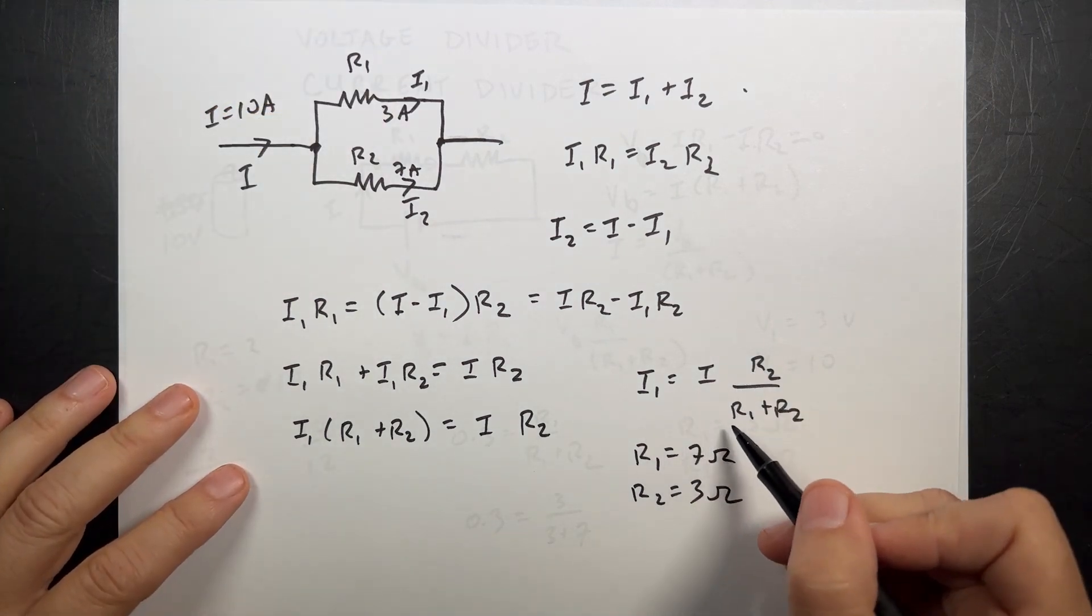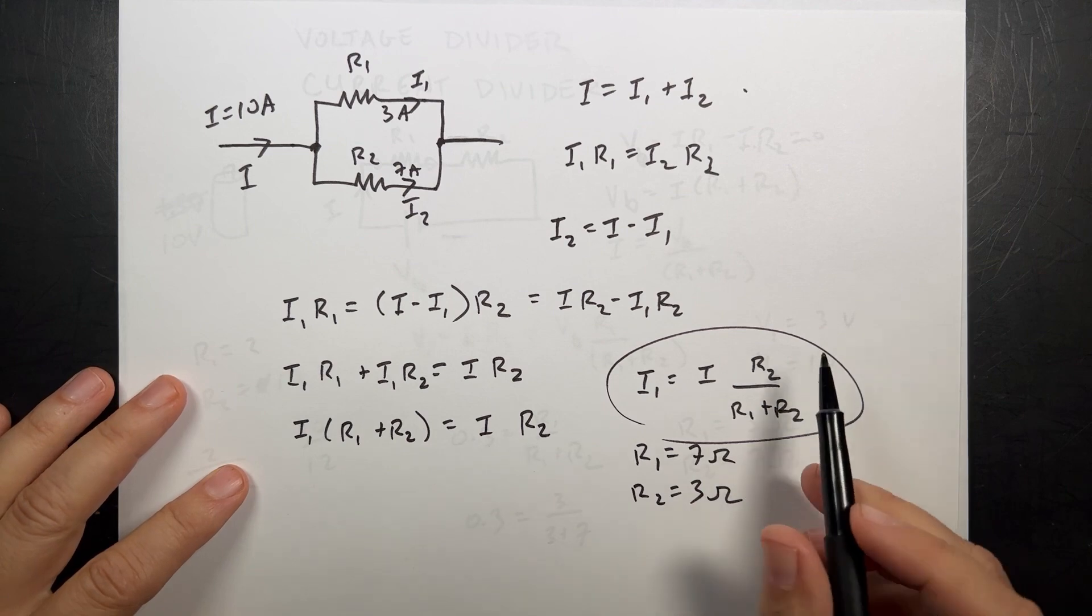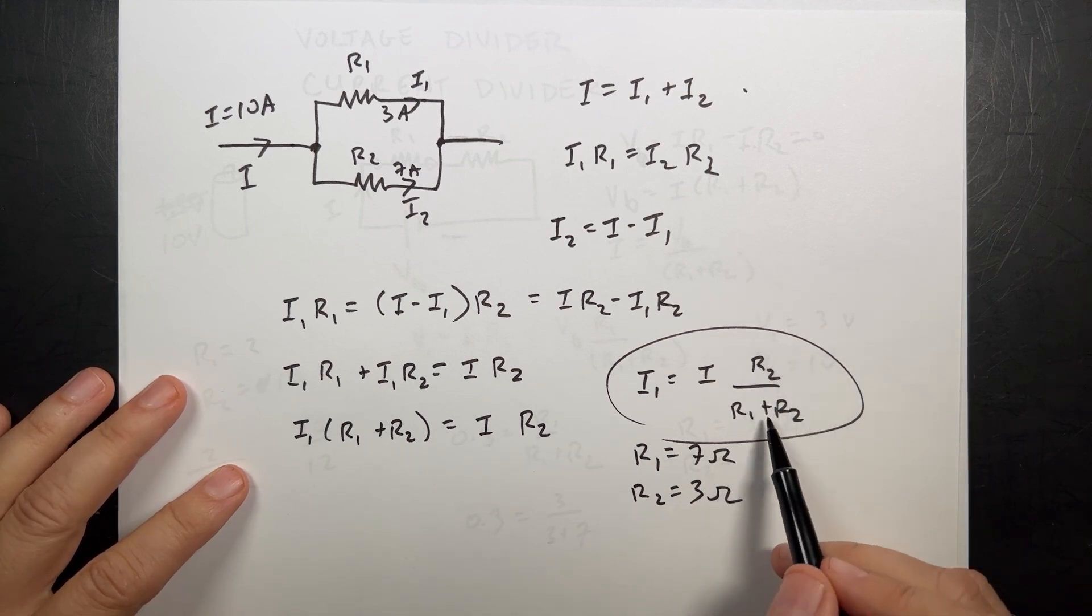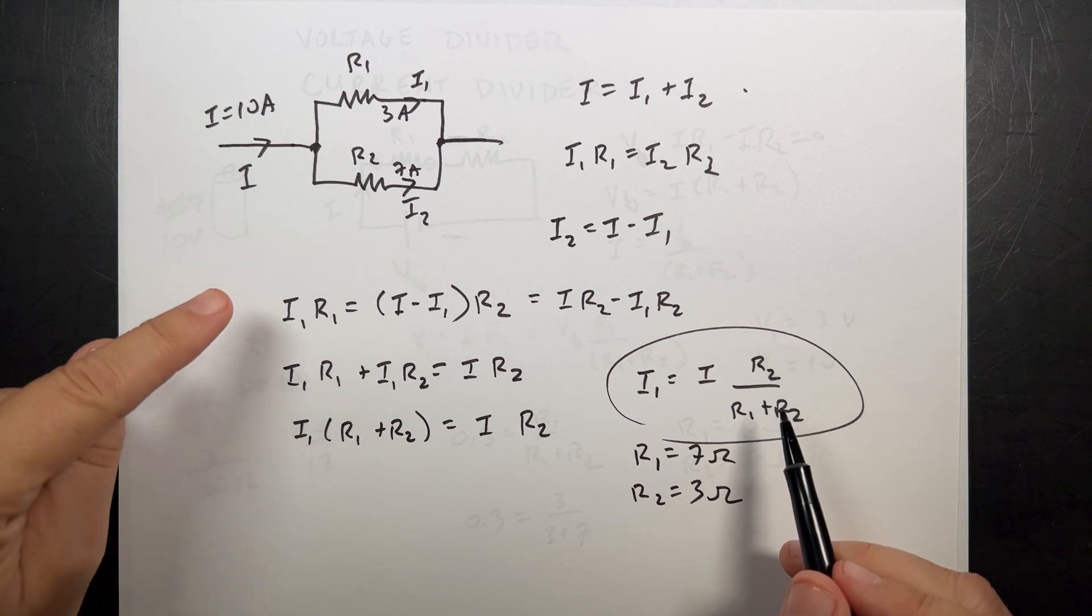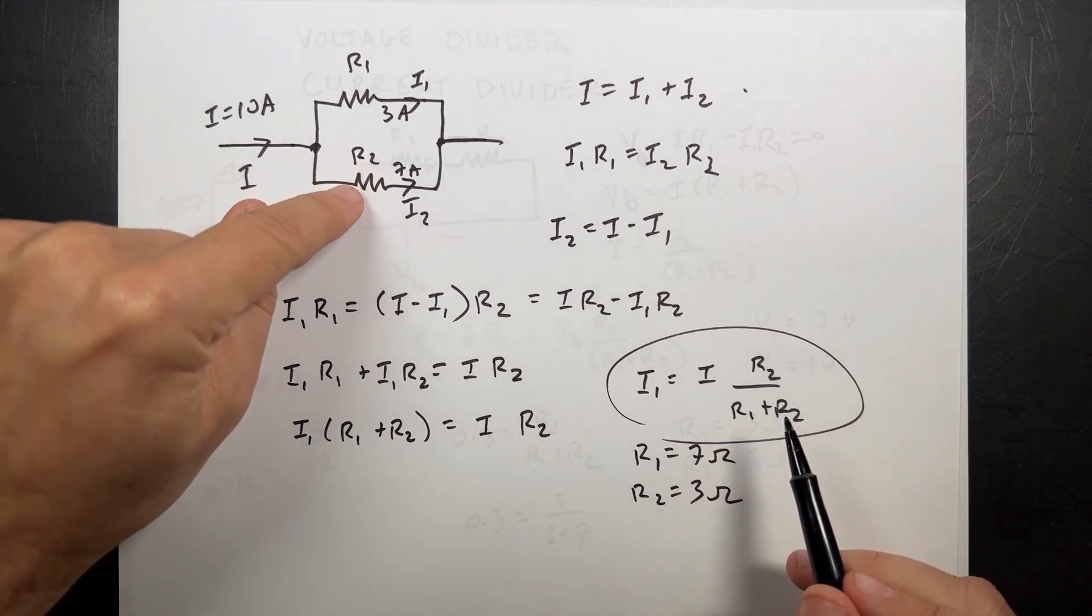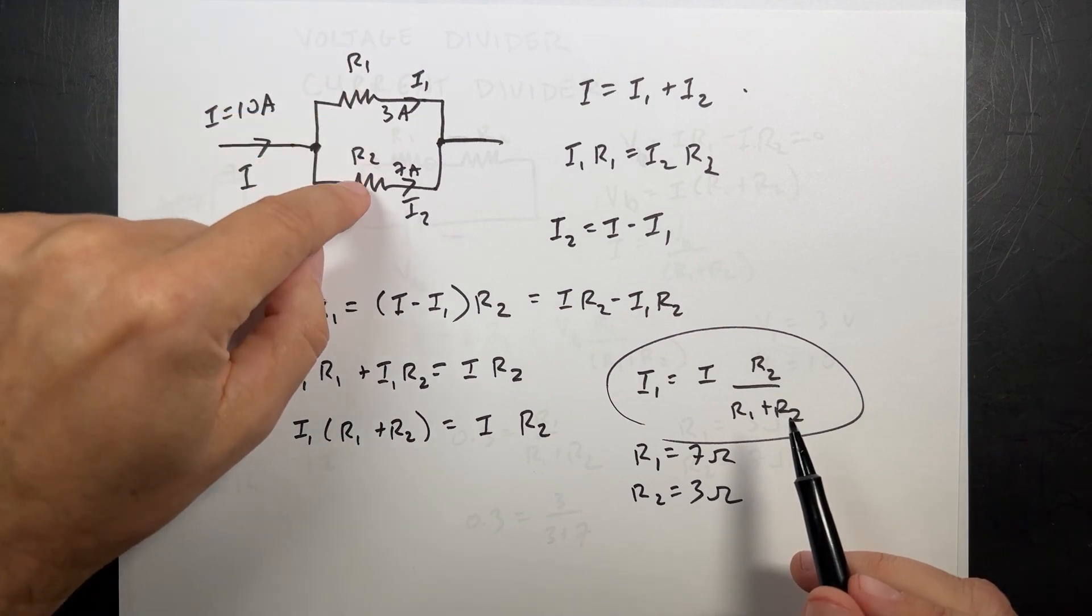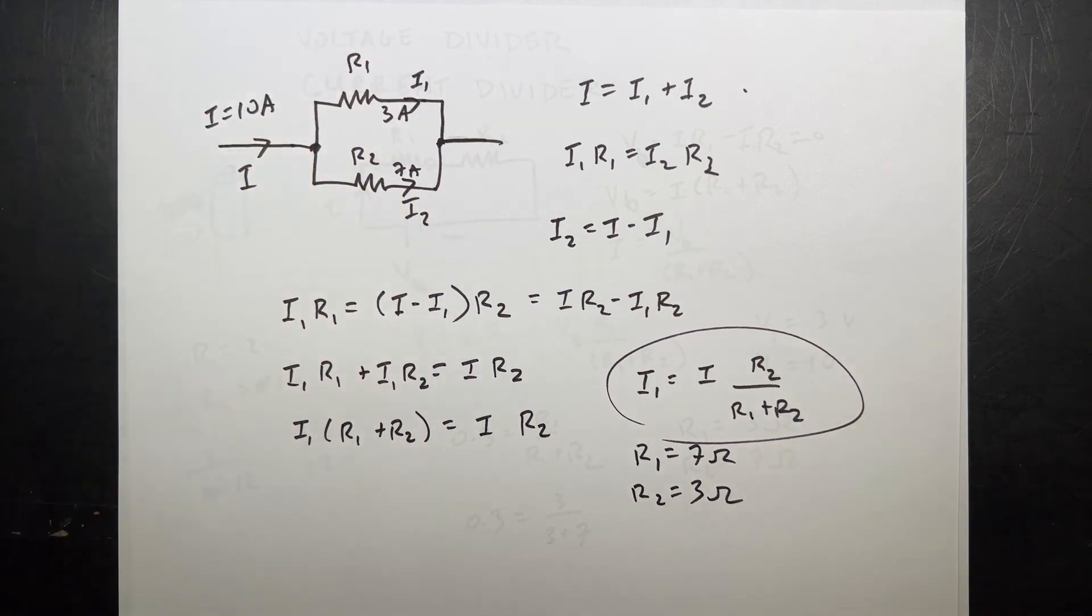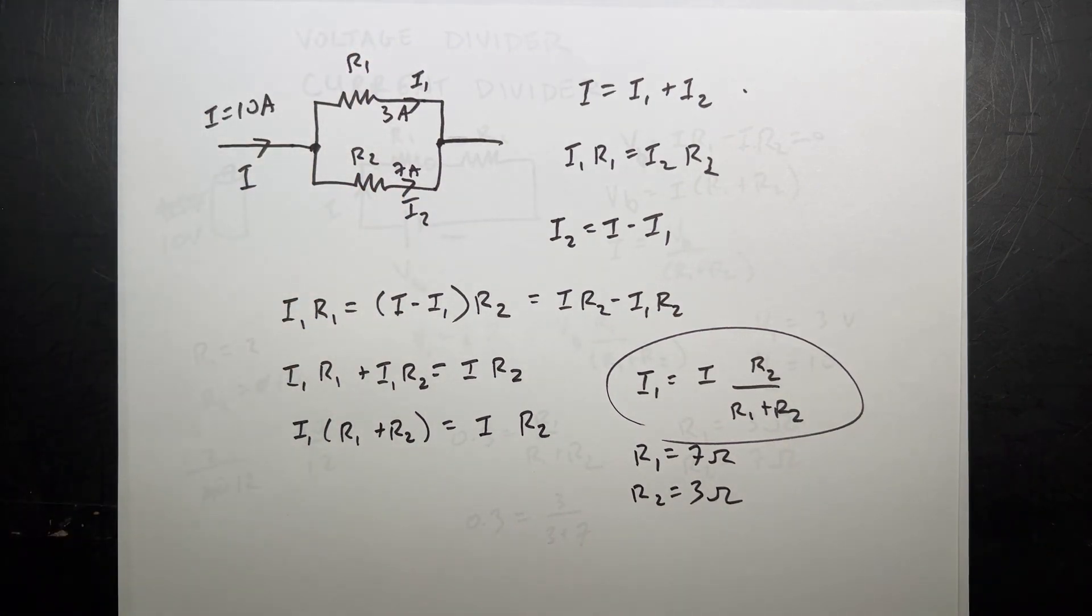That's a current divider right there. So I can pick any values I want here and split up the current. But the key thing here is that if I want 30% of the current to go through this wire, then I want that resistor to have 30% of the total. And there you go. Voltage divider, current divider. Fun stuff. The end.